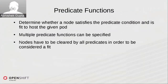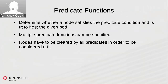The predicate functions are the filter mechanisms for filtering out nodes that do not fit the pod requirements, and you can specify multiple of them. Each predicate function deals with a specific constraint or requirement specified in the scheduler configuration, and each node must pass through all predicate functions to be considered a fit for scheduling a given pod.